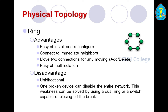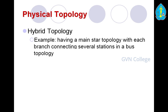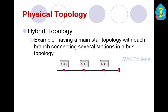The next important concept is hybrid topology. An example is having a main star topology with each branch connecting several stations in a bus topology. Bus and star topologies are combined to form another topology called hybrid topology — each bus is connected by a hub, forming the star component.